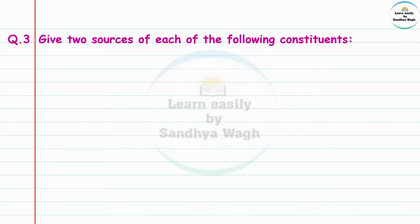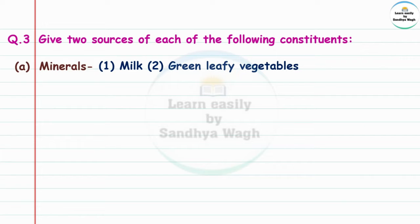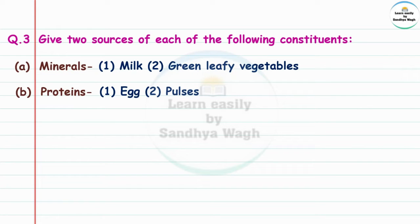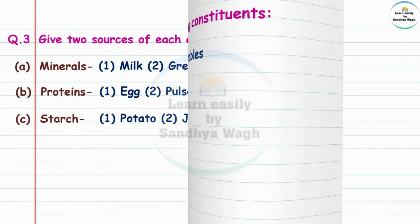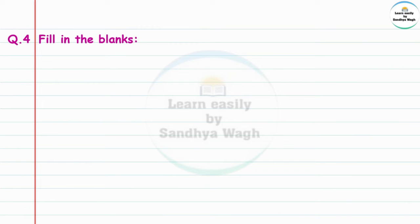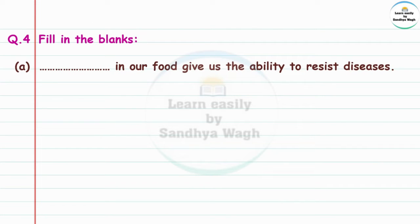Question 3: Give two sources of each of the following constituents. Minerals: milk and green leafy vegetables. Proteins: egg and pulses. Starch: potato and jowar.